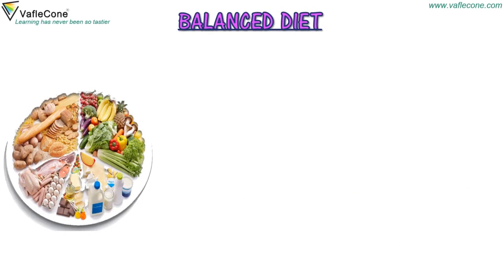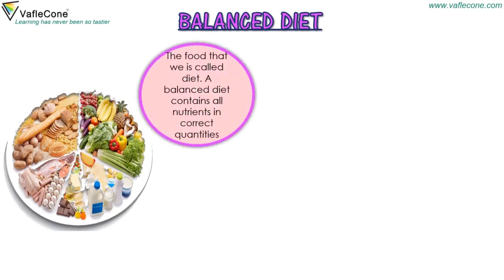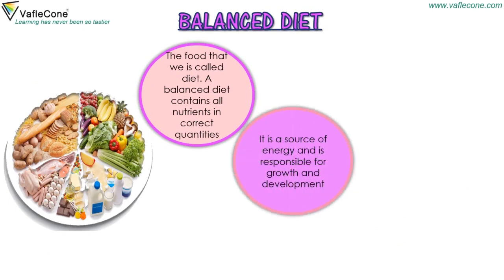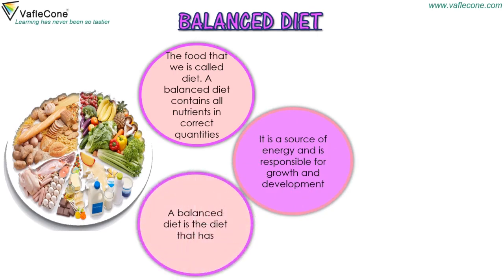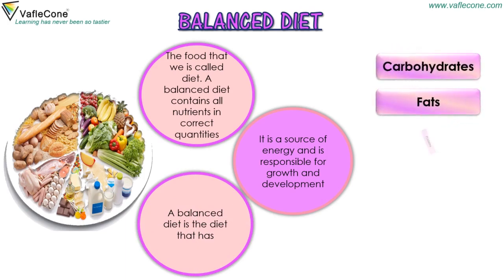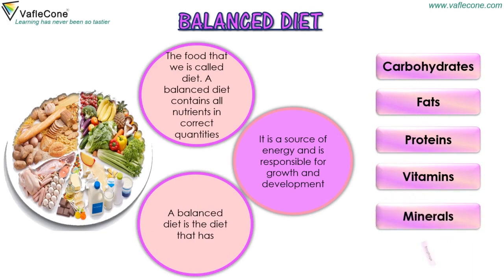The food that we eat is called diet. A balanced diet contains all nutrients in correct quantities. It is a source of energy and is responsible for growth and development. A balanced diet includes carbohydrates, fats, proteins, vitamins, minerals, and roughage.